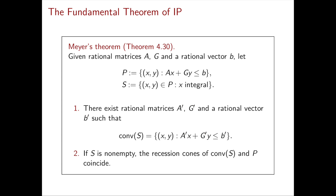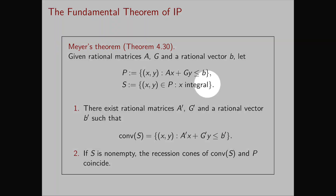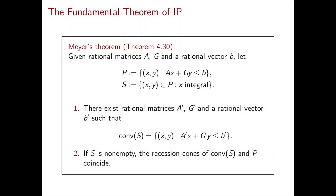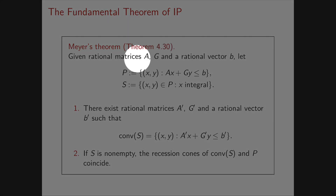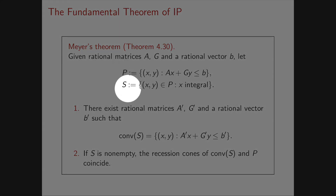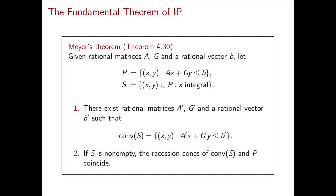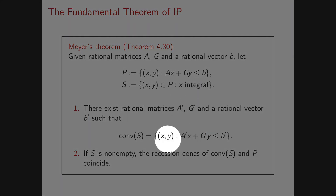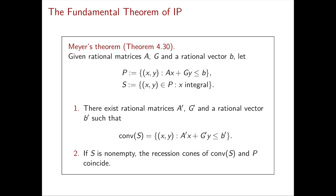It says that if we're given rational data — so A, G, and b are rational — then let's look at the polyhedron P given by Ax plus Gy less than or equal to b, and at the corresponding mixed integer linear set, which is the set of points in P with x integral. Then, first, the convex hull is a rational polyhedron — namely, convex hull can be written as a set of (x,y) with A′x plus G′y less than or equal to b′ for some rational A′, G′, and b′.